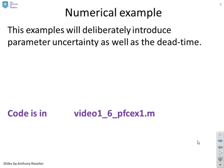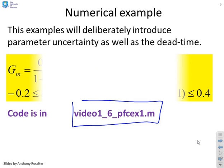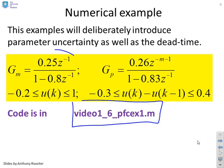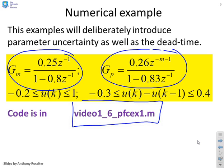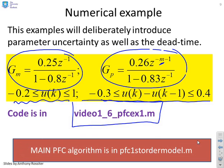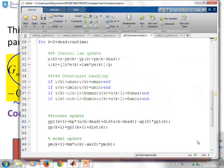So some examples. And you'll see the code is in this file here. Video 1 underscore 6 PFC EX 1. We've got a model. There it is. GM. And we've got a process which in some cases may have a delay because we just want to show that it does work with delays. We've got input limits and we've got rate limits. If you want to see the main PFC code, it's in this file here. Perhaps we can look at that now.